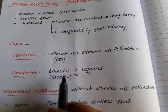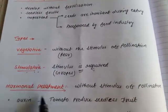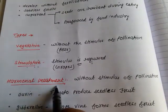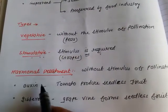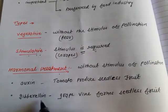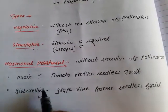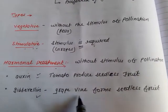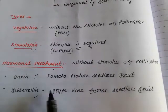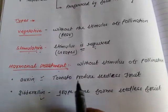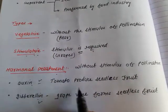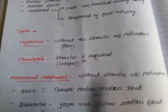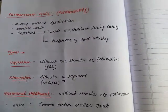A large number of fruit varieties have been altered genetically to undergo parthenocarpic development. This means parthenocarpy can also be induced without the stimulus of pollination by giving hormonal treatment. The most commonly used hormones are auxins and gibberellin. For example, tomato produces seedless fruits if treated with auxin, and grapevine forms seedless fruits if treated with gibberellin. So parthenocarpy can be induced. This was all about parthenocarpy and our today's topic.